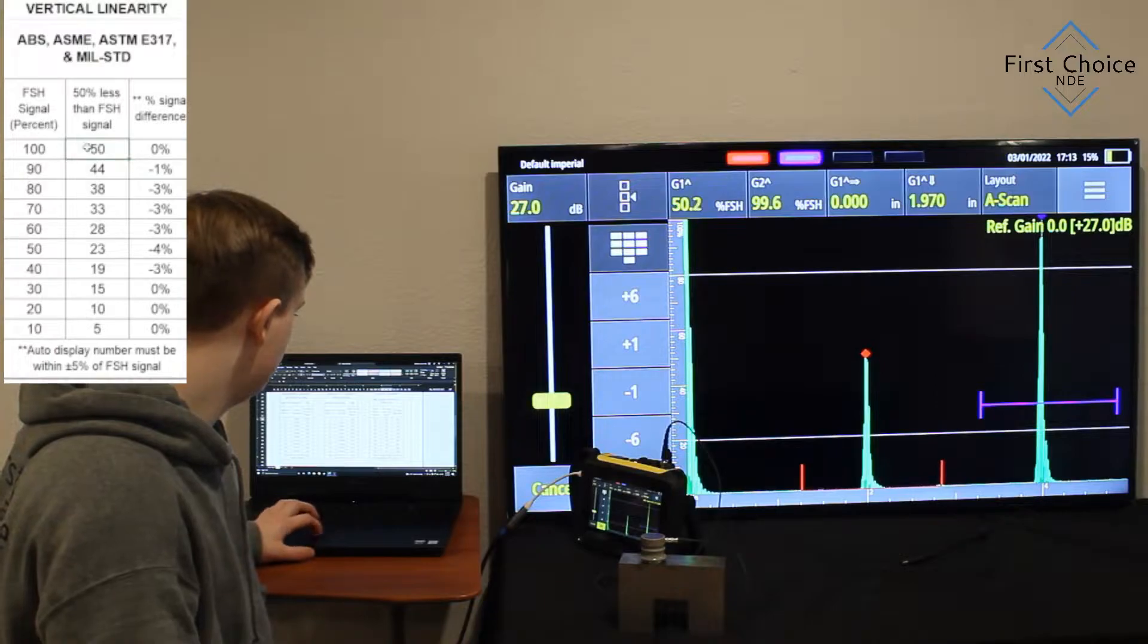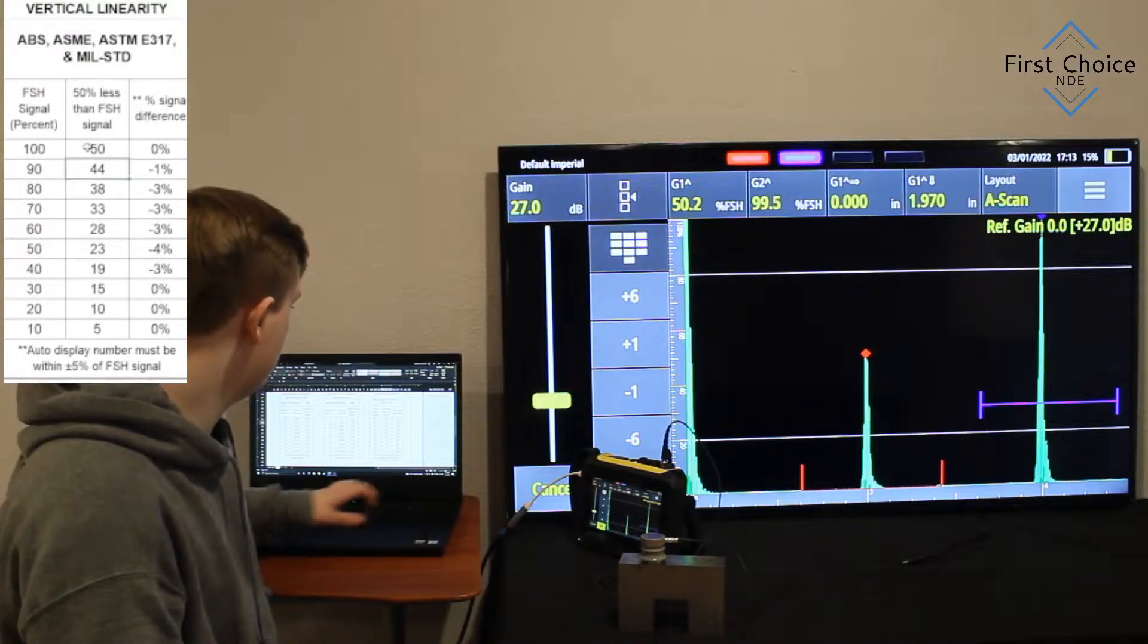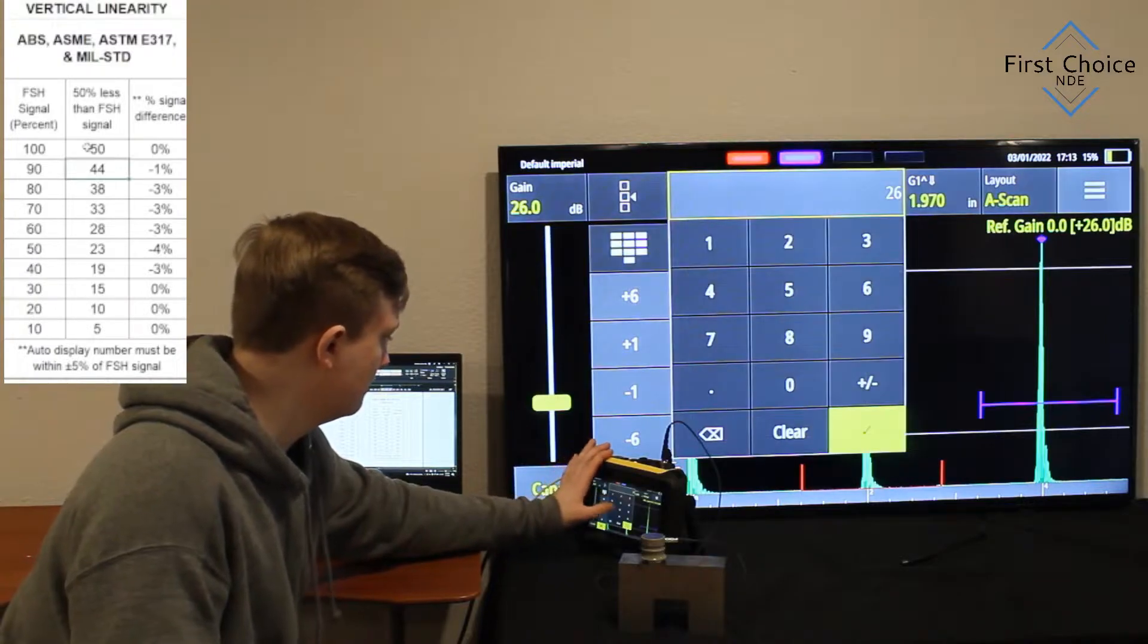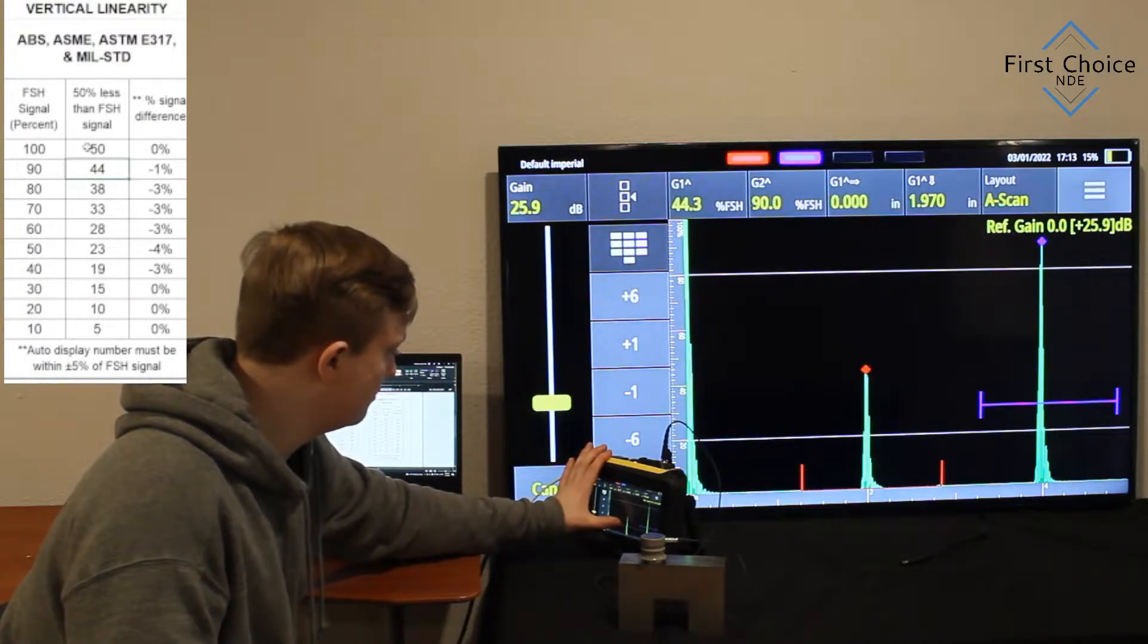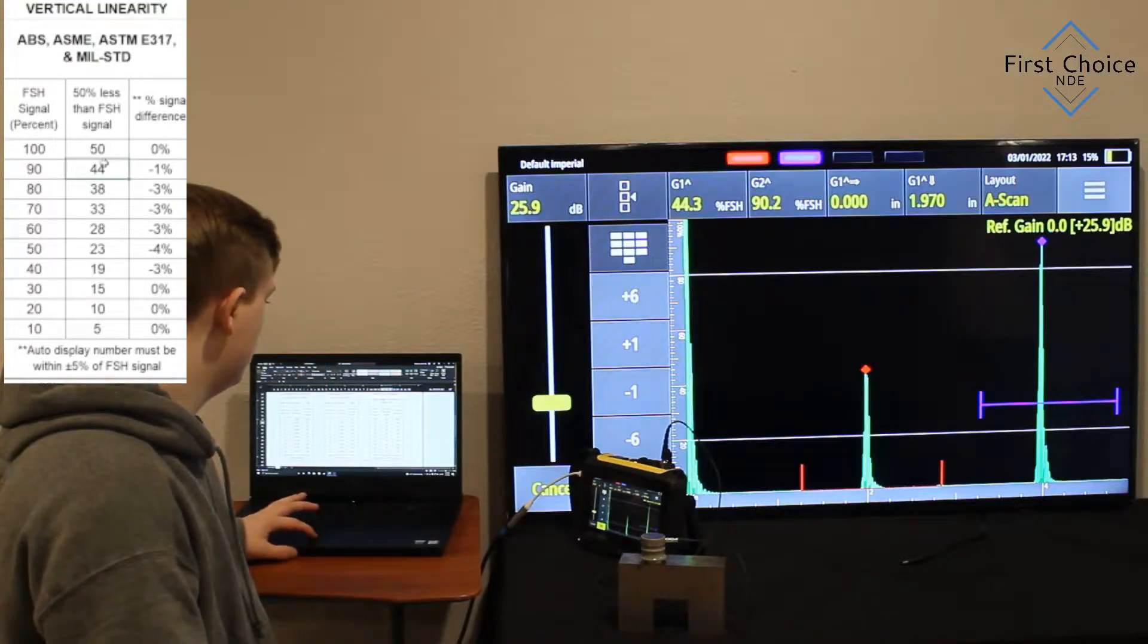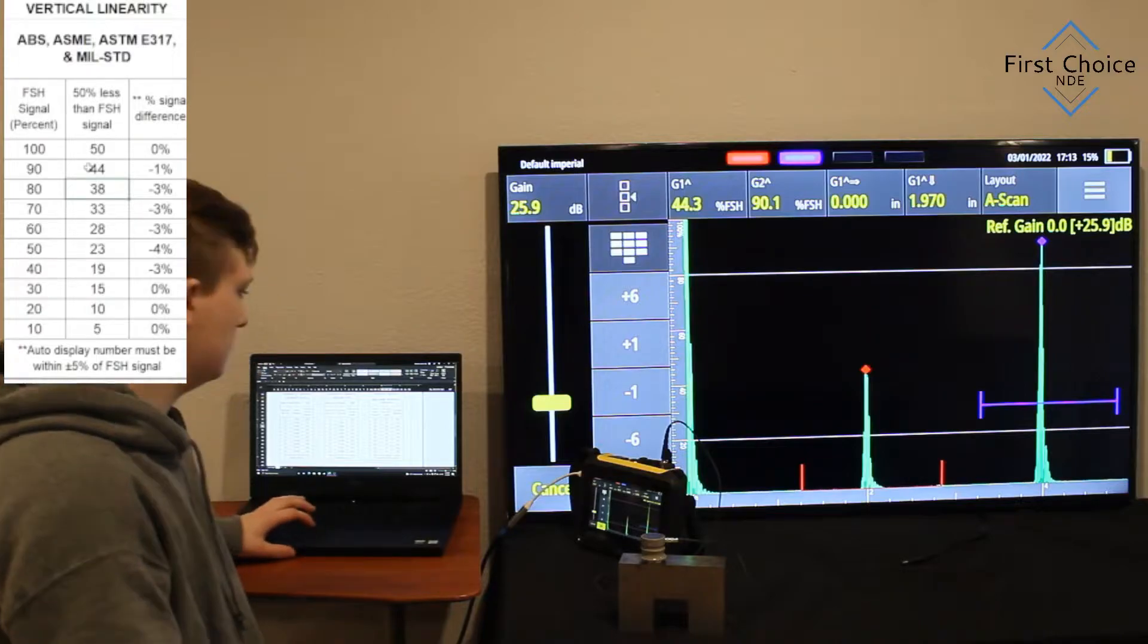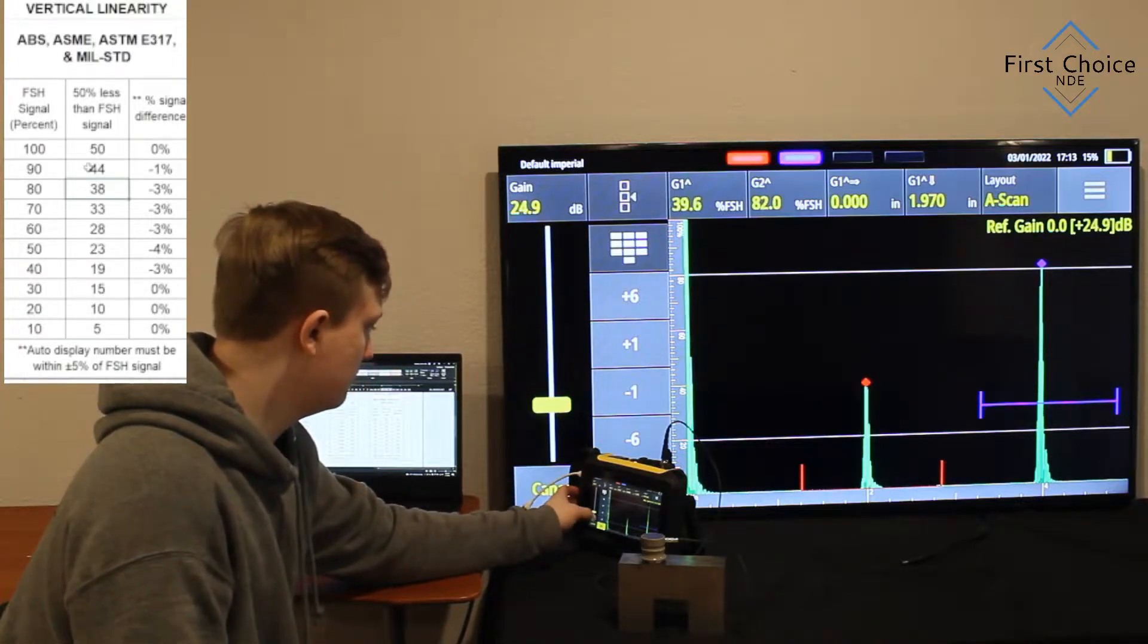So we started at 100% signal, that's the one on the right, and then the one on the left was 50%. So now what we need to do, you want to drop the dB so that the signal on the right reads 90%, and then you calculate what the signal on the left is. So ours was 44%.